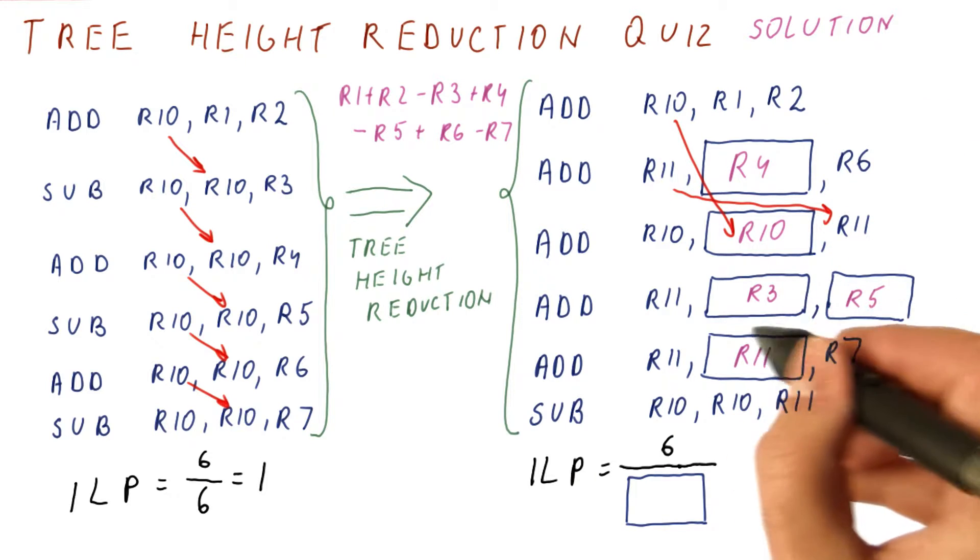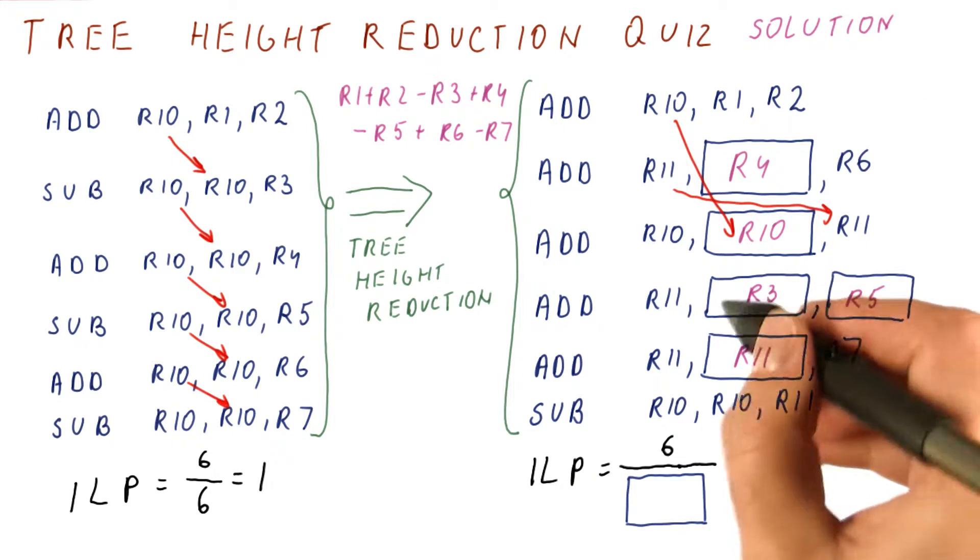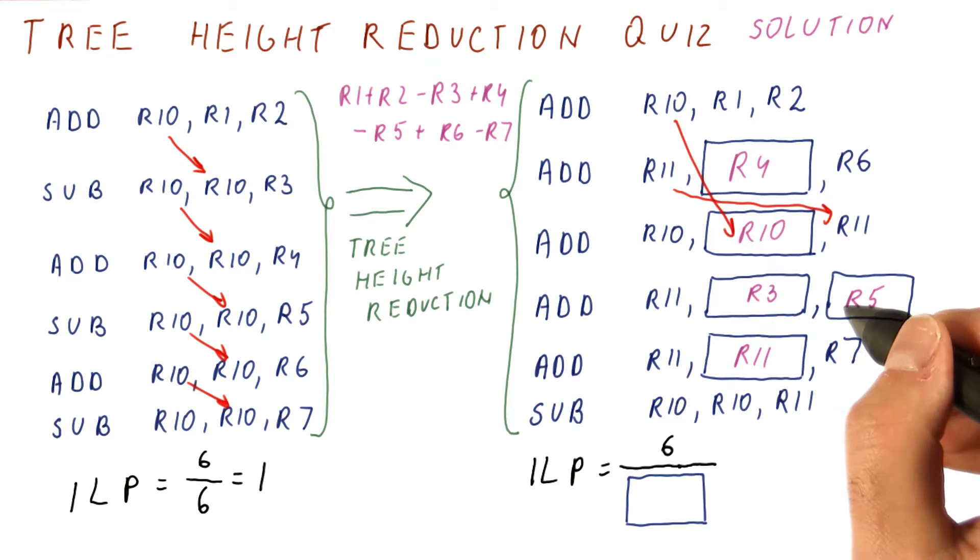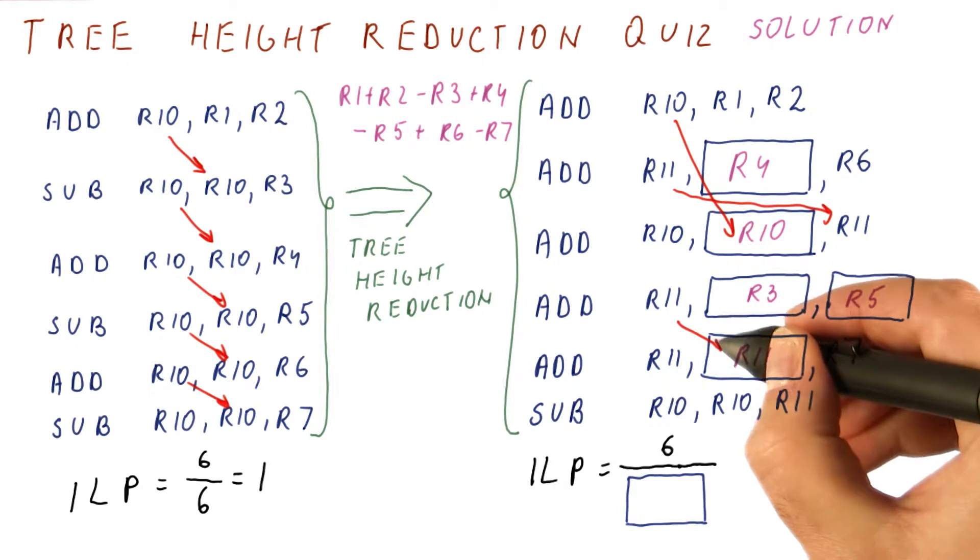There is now no dependence here. So this one can be done right away, even though it's the fourth instruction in our code. And then there is a dependence here.